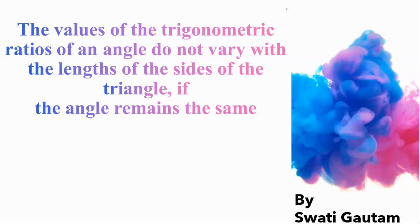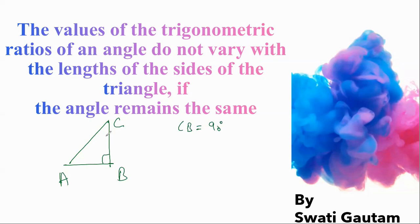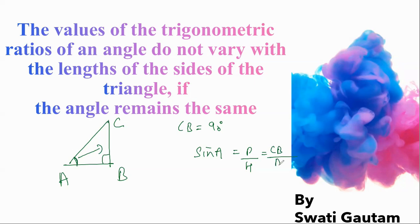Let's understand what the statement is saying. Suppose there is a triangle ACB where angle B equals 90 degrees — a right angle triangle. If I am talking about angle A, for angle A the trigonometric ratio sine A equals perpendicular over hypotenuse. The perpendicular according to angle A is the front side CB, and the hypotenuse is the sloped side AC, so sine A = CB/AC.